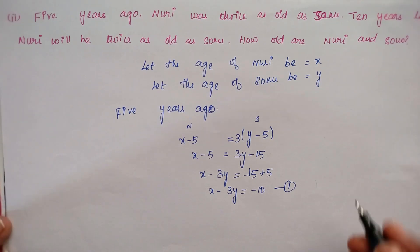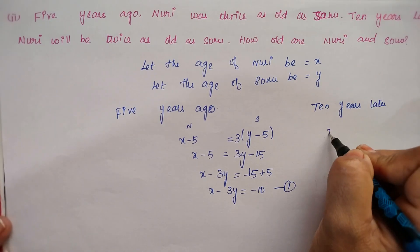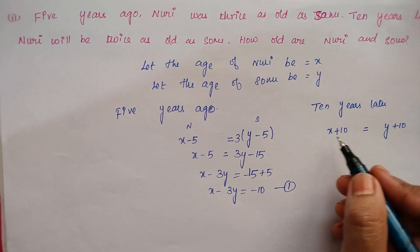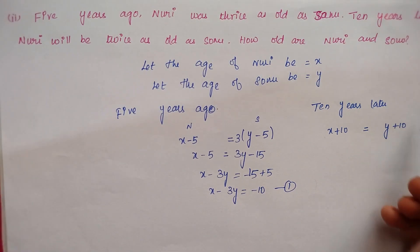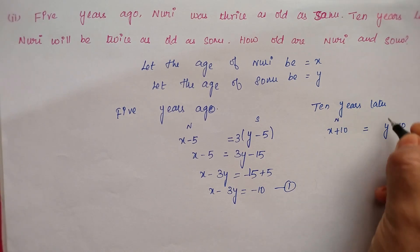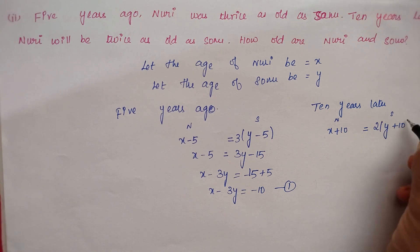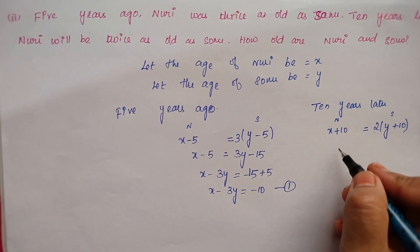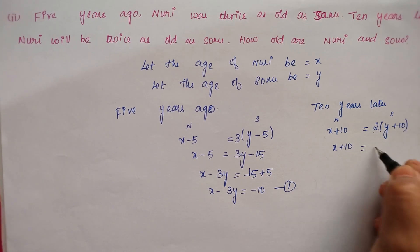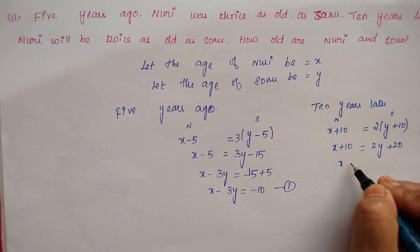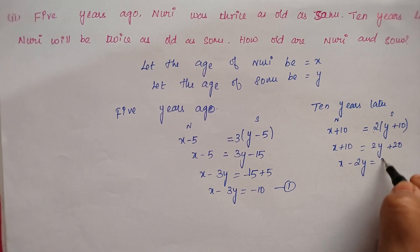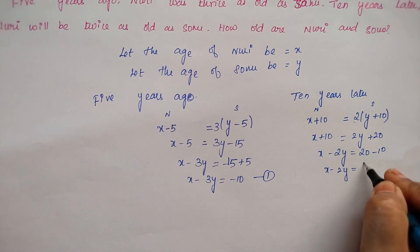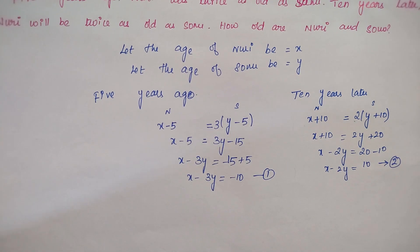Next is the second condition: 10 years later, Nuri will be twice as old as Sonu. So, x plus 10 equal to 2 into y plus 10. Simplifying: x plus 10 equal to 2y plus 20, so x minus 2y equal to 10. This is equation 2. Now we have 2 equations to solve by the elimination method.